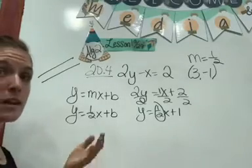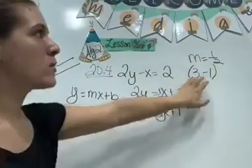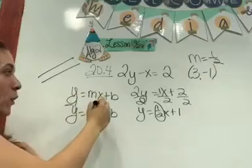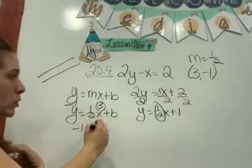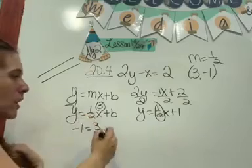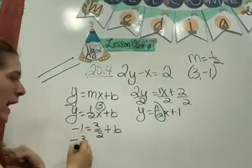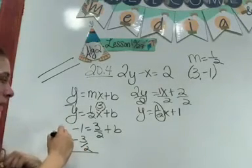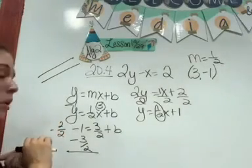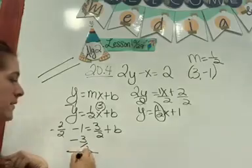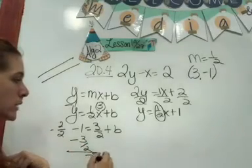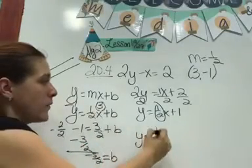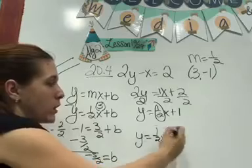Now you're going to make your own line. You're going to go y equals one half x plus b. All you have to do is solve for b because you have your slope. You're going to use that point they gave you: negative 1 for y and 3 for x. So negative 1 equals 3 times one half plus b, that's 3 over 2 plus b. Then negative 1 as a fraction is negative 2 over 2, so negative 2 over 2 minus 3 over 2 gives you negative 5 over 2 equals b.